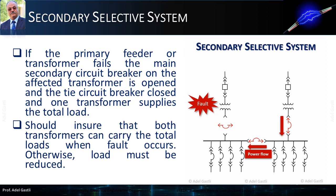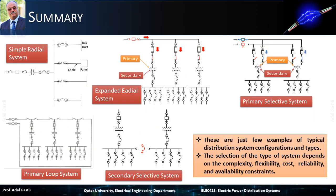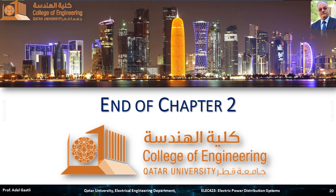However, we should ensure that both transformers can carry the total load when a fault occurs. Otherwise, load must be reduced. As mentioned earlier, these are just a few examples of typical distribution system configurations and types. The selection of the type of system depends on the complexity, flexibility, cost, reliability, and availability constraints. This is the end of this lecture and this chapter. I hope that it was clear and informative. Thank you for watching.